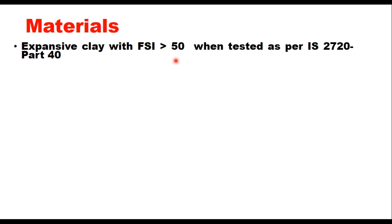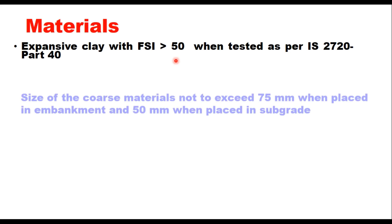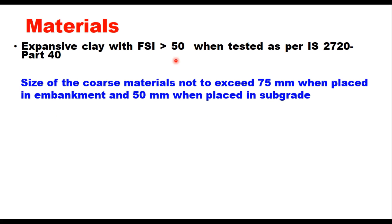When an expansive clay having FSI less than 50 is used as fill material, then the top 500 mm portion of the embankment just below the subgrade shall be non-expansive in nature. The size of coarse materials should not exceed generally 75 mm when placed in embankment and 50 mm when placed in subgrade. However, the engineer in charge may permit the use of material coarser than these sizes if satisfied that the material can be compacted to desired density without any difficulty.